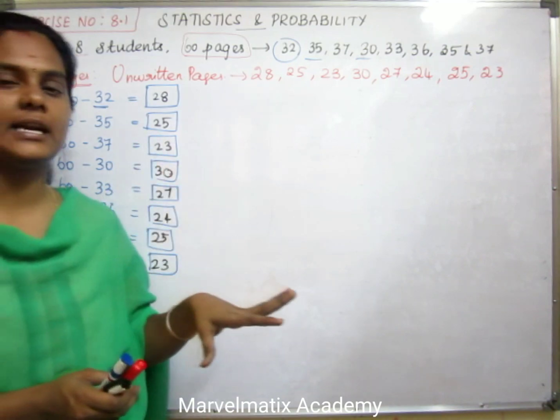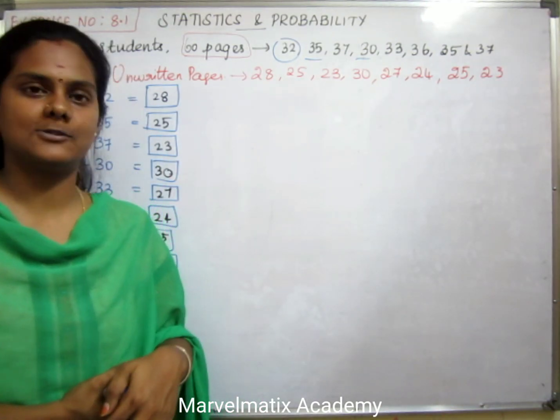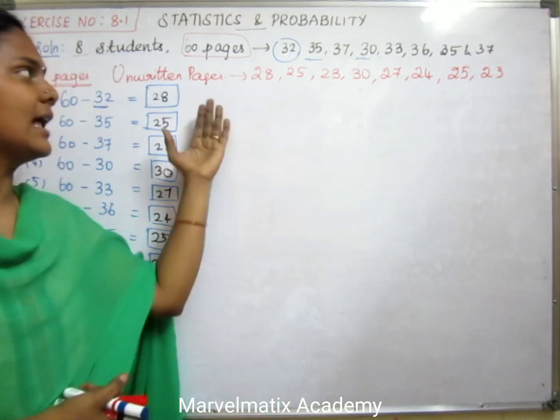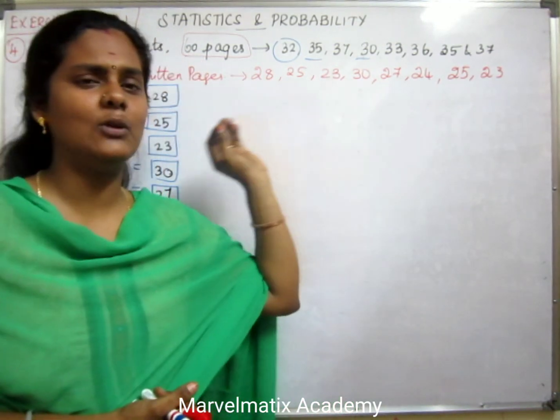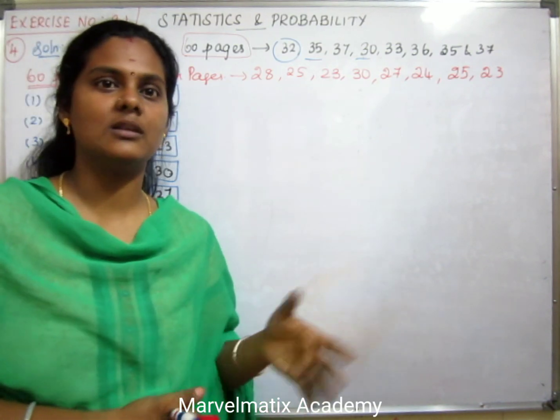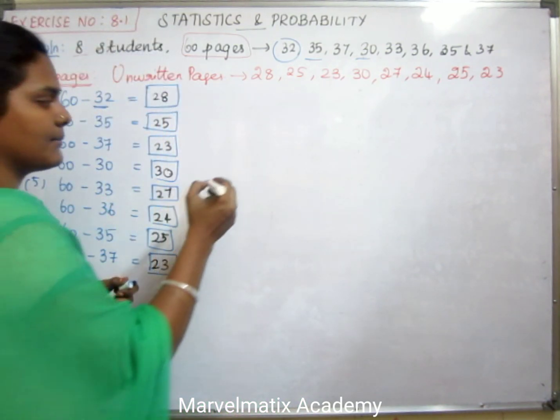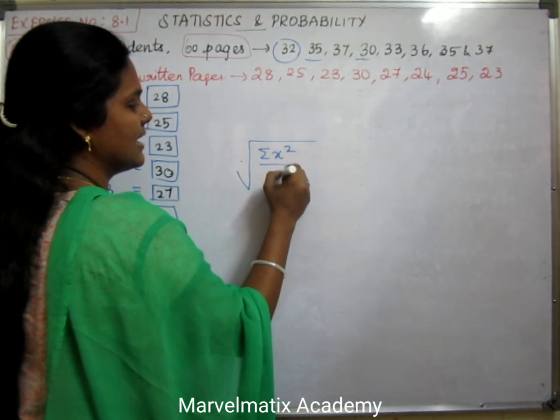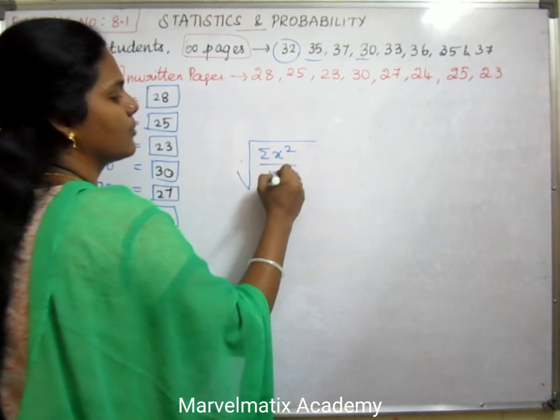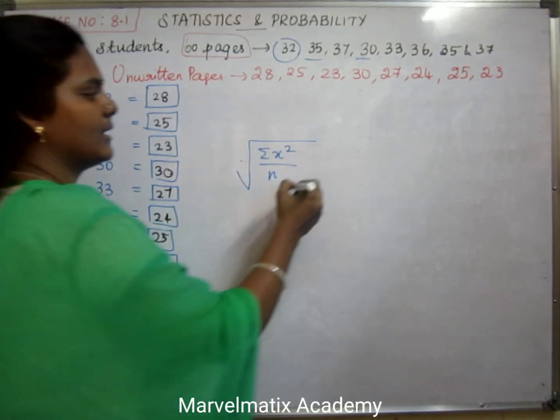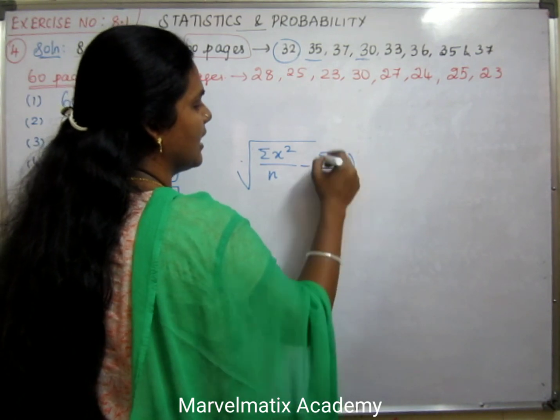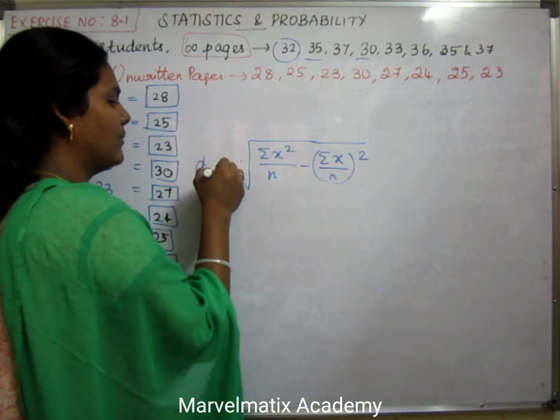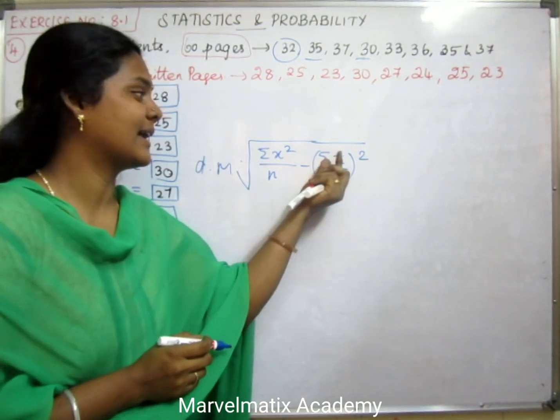How do we use the method? We use the direct method. The formula is: sigma equals square root of summation x² divided by n minus (summation x by n) whole square. This is the direct method formula for ungrouped data with small n.